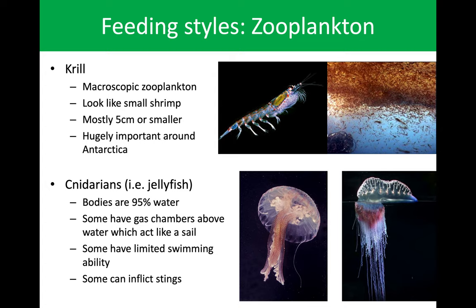Our last planktonic organism is the jellyfish. 95% of the jellyfish is made up of water, with a few chambers of gas tucked in between those cells of water. These act like a sail — they just end up floating in water and moving with the tide. They can undulate occasionally, which will propel them briefly, but not for sustained swimming.